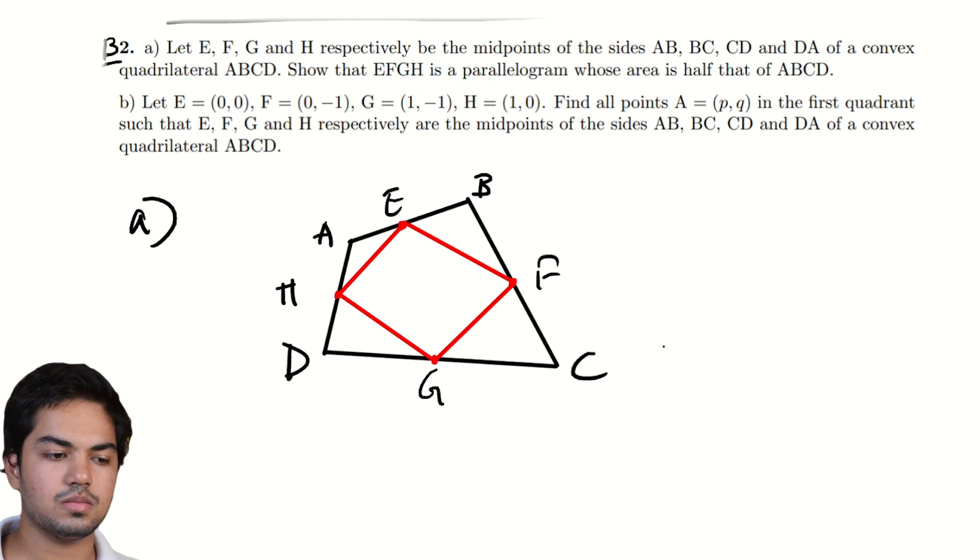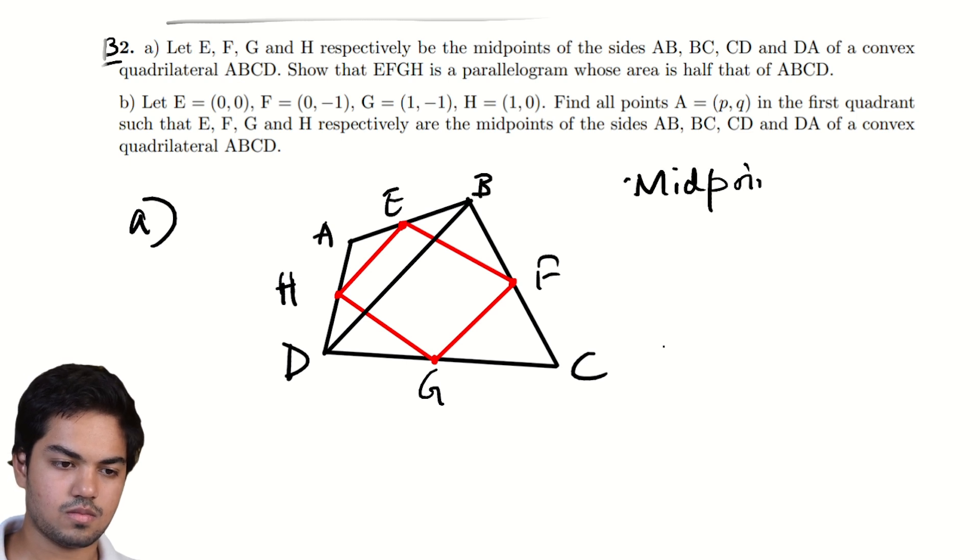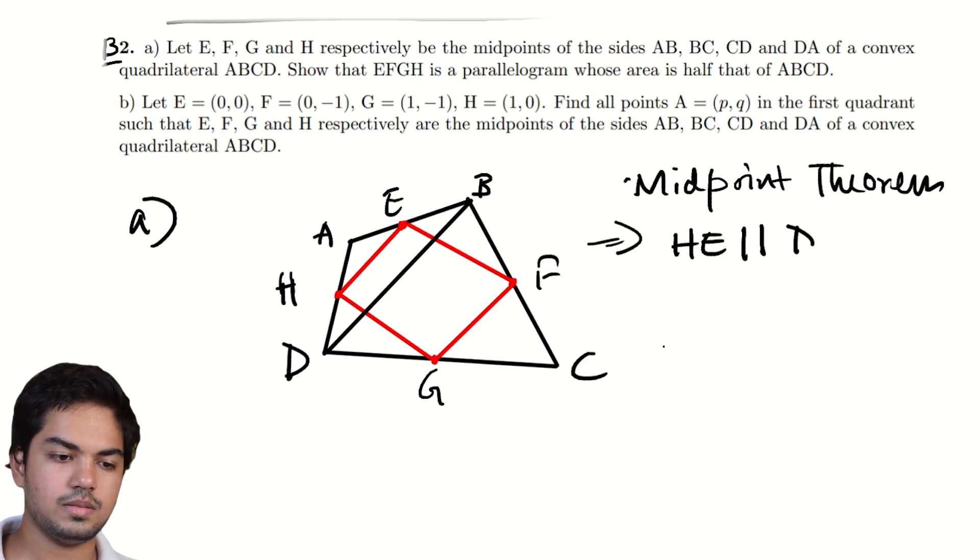This is a classic example of the midpoint theorem. So for example if I draw in this diagonal BD by the midpoint theorem since H is the midpoint of AD and E is the midpoint of AB. Midpoint theorem implies that HE is parallel to DB and by a very same logic FG is parallel to BD.